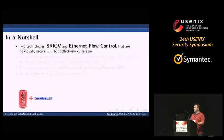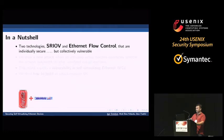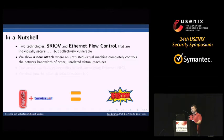Mixing technologies sometimes gives interesting results — for example, Coke and Mentos — but in security it's not funny. Each of these technologies individually is secure, but when we put them together we have a security problem. I will show a new attack where an untrusted virtual machine can completely control the network bandwidth and latency of other virtual machines that are using the same SR-IOV device.